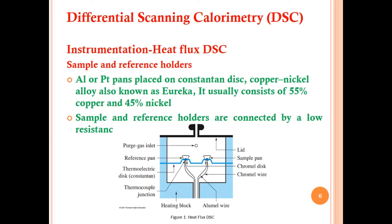Aluminum pans are placed on a constantan disc, a copper-nickel alloy also known as Eureka, consisting of 55% copper and 45% nickel. Sample and reference holders are connected by low resistance. The block diagram shows a lid covering the whole furnace system, the sample pan, chromel disc, chromel wire, and alumel wire.